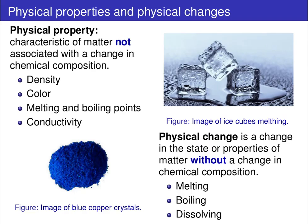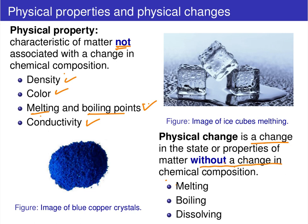First, let's discuss physical properties and physical changes. A physical property is a characteristic of matter that is not associated with a change in the chemical composition. Some examples of this could be density, color, melting point, boiling point, and conductivity. If we analyze the density or color of a substance, we're obviously not changing its composition. A physical change is a change in which the state or properties of matter occurs without a change in chemical composition.